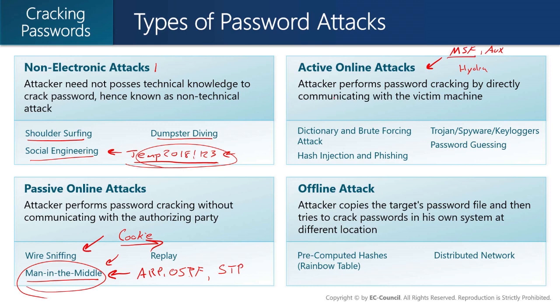This tends to be very slow because you're building that three-way handshake, connecting to the service, waiting for an authentication prompt, trying to authenticate, and then getting rejected. This is slow and noisy, because each of your failed attempts are going to show up in a log file. But it's something that's still possible and good to test and understand how it works.